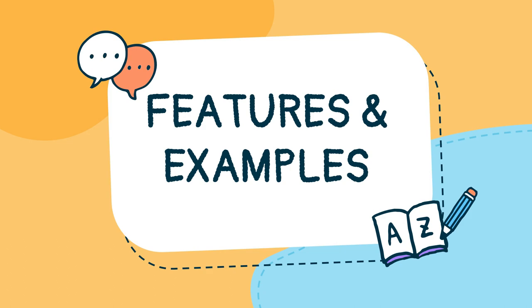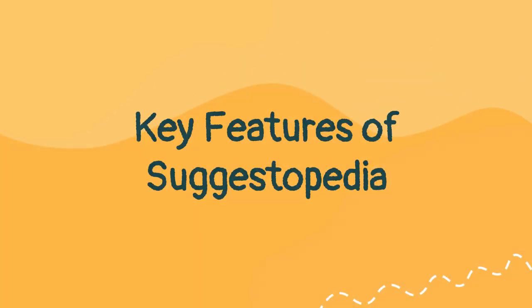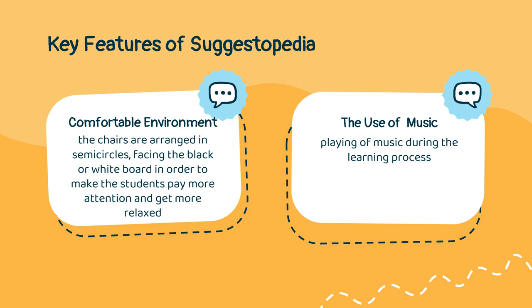For you to have a deeper understanding of the Suggestopedia approach, let me discuss its features and present some examples. Suggestopedia has five features. First on the list is comfortable environment. In the Suggestopedia approach, the classroom is not the same as common classrooms. The chairs are arranged in semicircles, facing the blackboard or whiteboard, in order to make students pay more attention and get more relaxed. Next, the light in the classroom is dimmed in order to make the students' minds more relaxed.